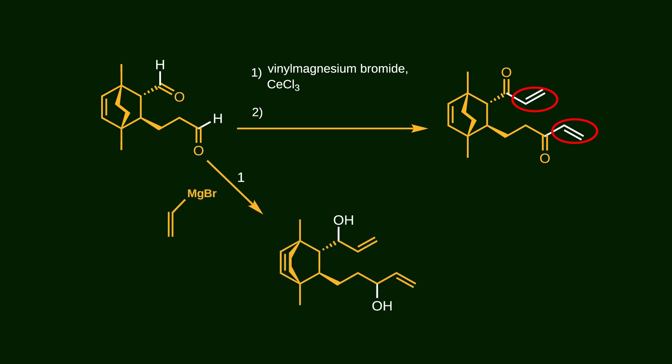Vinyl magnesium bromide is an appropriate reagent for forming carbon-carbon bonds by attacking aldehydes. But here's the catch, it converts aldehydes into alcohols. So, in the next step, these alcohols are oxidized using the Dess-Martin protocol to produce the corresponding ketones.